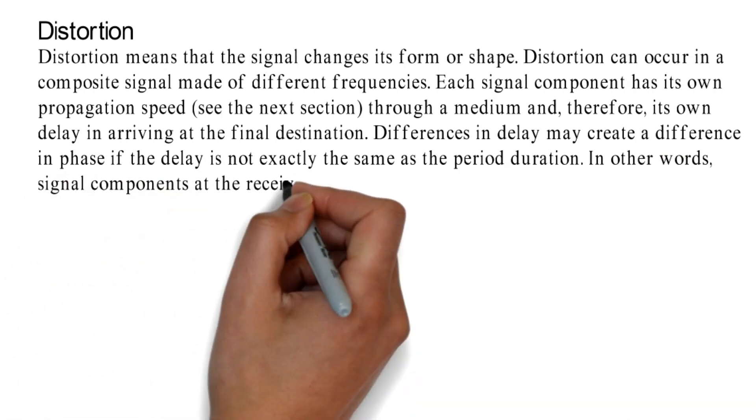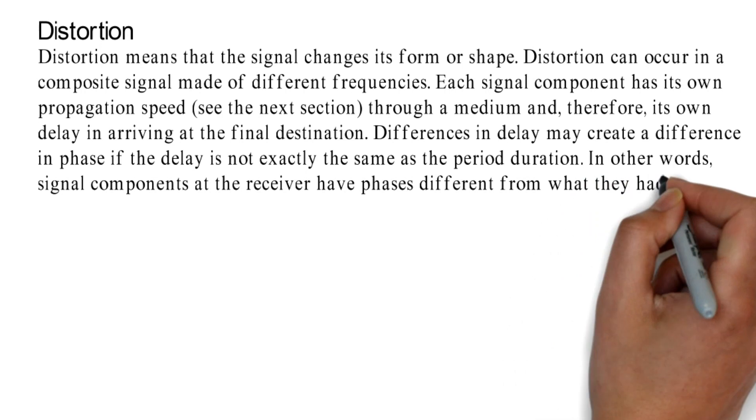In other words, signal components at the receiver have phases different from what they had at the sender.